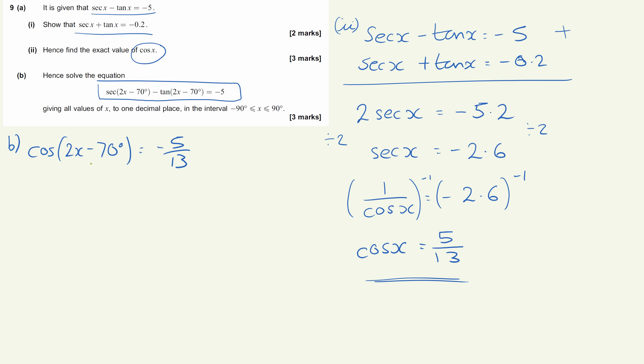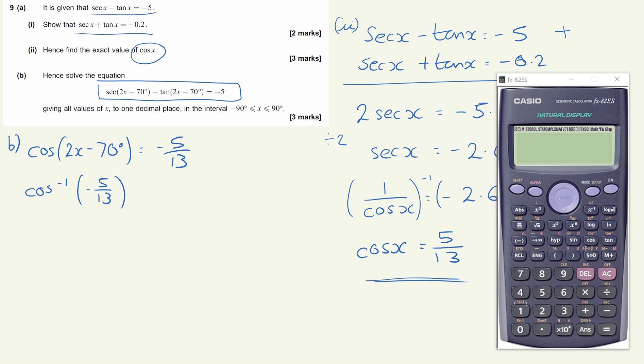So our principal value is when we're going to do the inverse cosine of minus 5 thirteenths. Calculator, so inverse cosine of the negative, oops not double negative, of 5 thirteenths. Make sure you calculate this in degrees, and then we get the principal solution of 112.62 degrees.